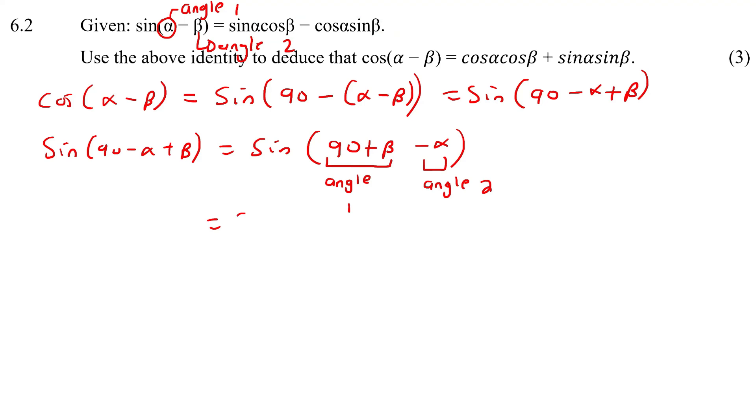What it tells me is it becomes sin of the first angle, so that's my 90 + β. Then it's cos of my angle 2. Then I put a minus. The cos—notice I'm not using this one because that's what we're trying to prove. So now it's cos of my angle 1, which is 90 + β, and then the sin, which is my sin(α).